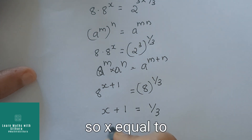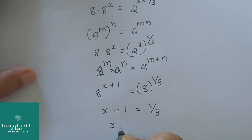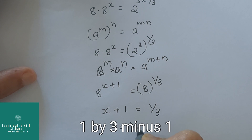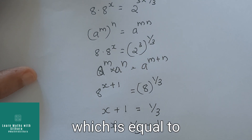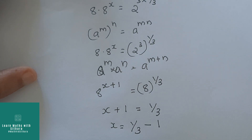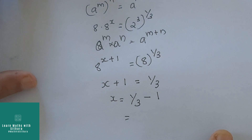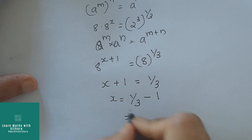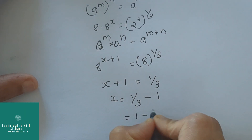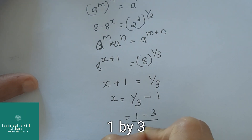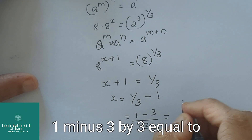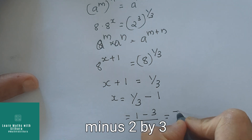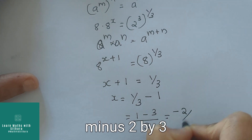So x equal to 1 by 3 minus 1, which is equal to 1 minus 3 by 3, equal to minus 2 by 3.